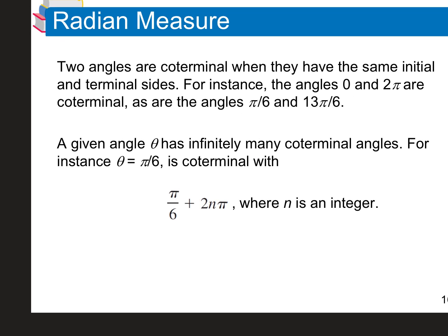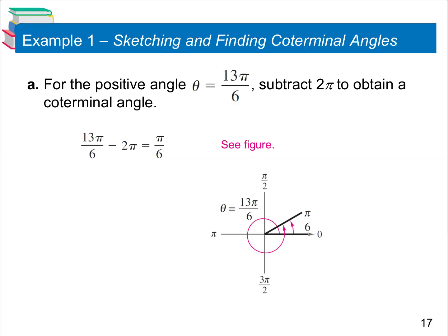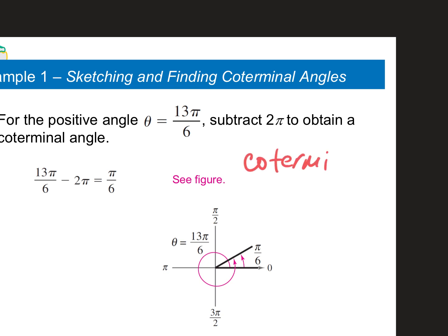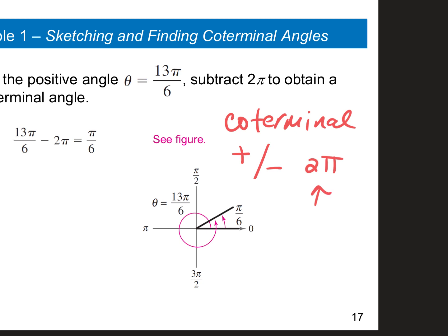Two angles are coterminal when they share the same initial and terminal sides. What changes is the direction or how many times you go around a circle. To find coterminal angles, you add or subtract 2 pi. How much is 2 pi? It's 360 degrees — it's one whole circle. You're adding or subtracting whole circles, and you end up at the exact same spot with a different angle measure.